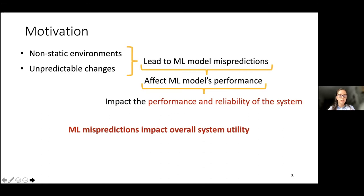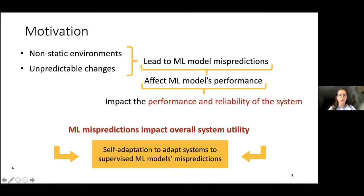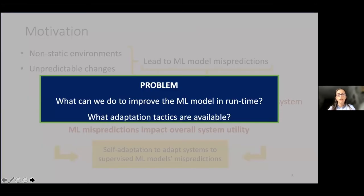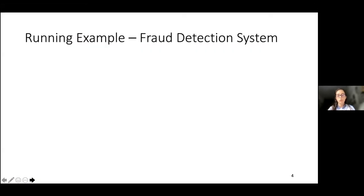Based on this, we came up with the vision for self-adaptation to adapt machine learning models in systems that depend on these models, whenever these models are misbehaving. However, there are a lot of challenges. In particular, we deal with one in this work: what can we actually do to improve the machine learning model at runtime? So what adaptation tactics do we have available? To talk about our vision, I'm going to use a running example from the fraud detection system domain.